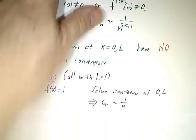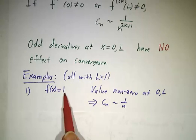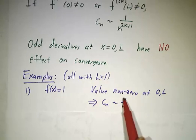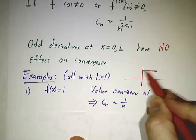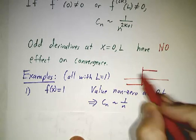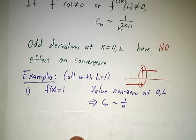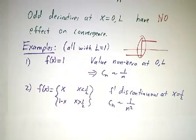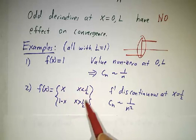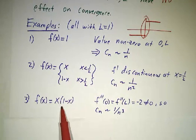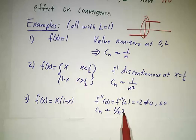So for example, if you had the function f equals 1, well the value is non-zero at 0 and L, and when you extend it, you have the function 1. If you do the mirroring, you get the function negative 1 and you get a jump at 0. Because of that jump, the Fourier coefficients go as 1 over n. If you have a tent function, then the derivative is discontinuous at this point in the middle, so you don't even care what happens at the endpoints. And finally, our parabola. With the parabola, it went as 1 over n cubed.